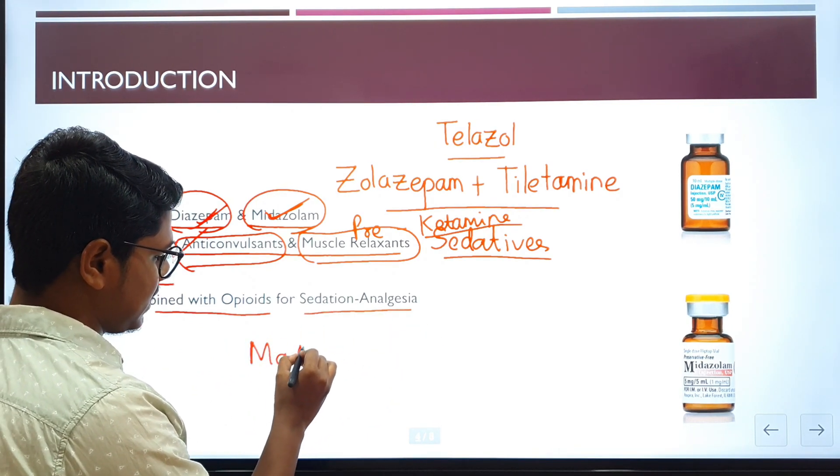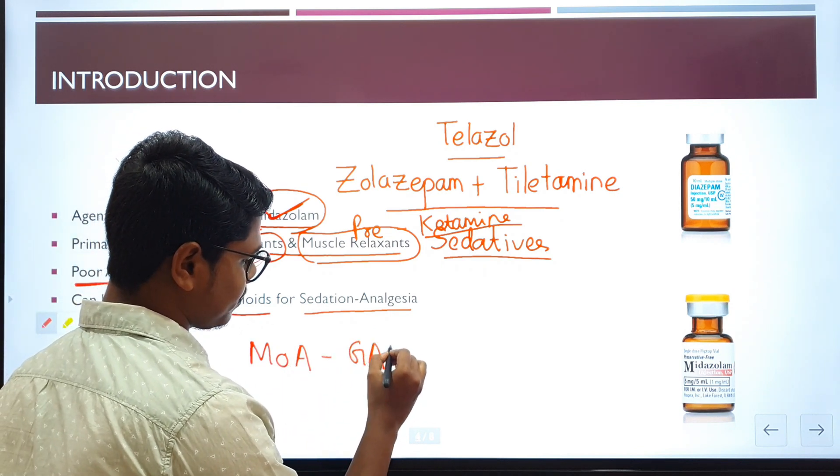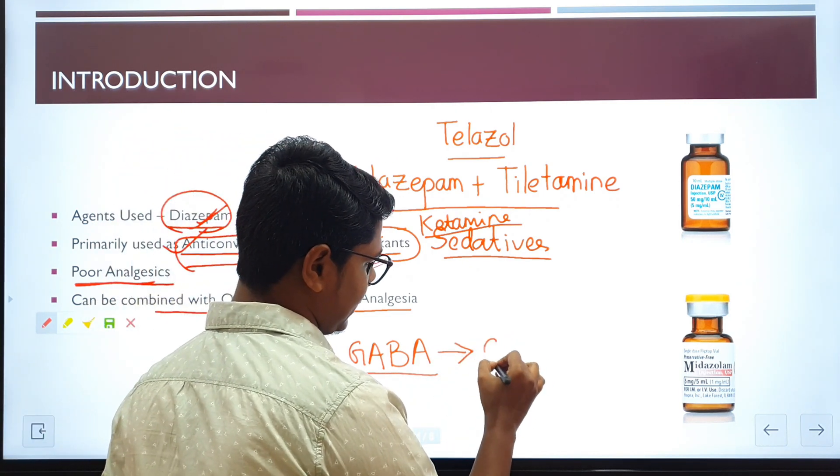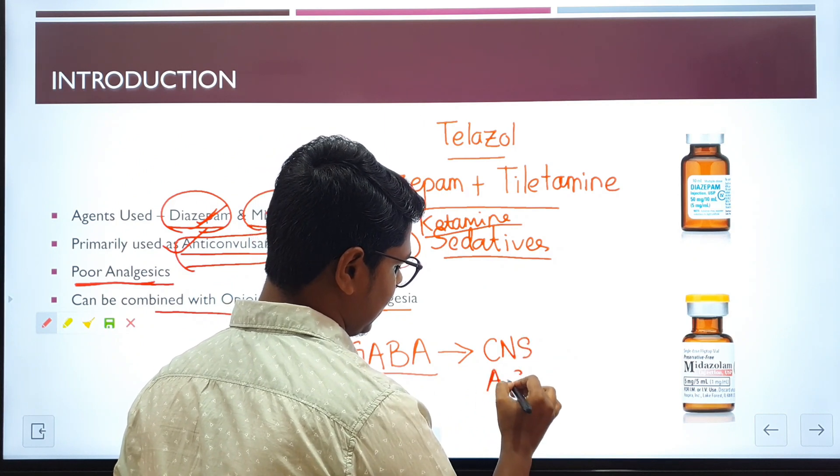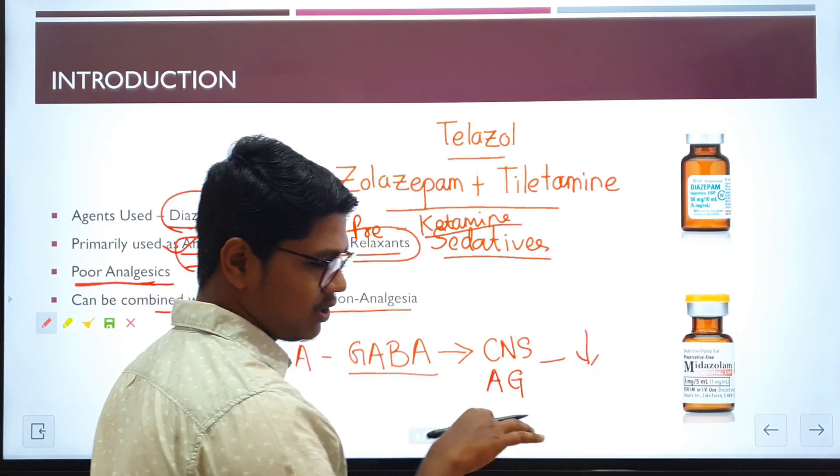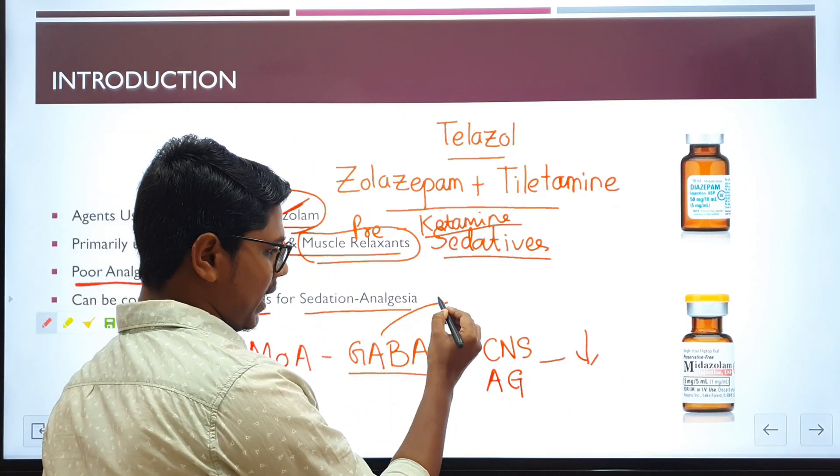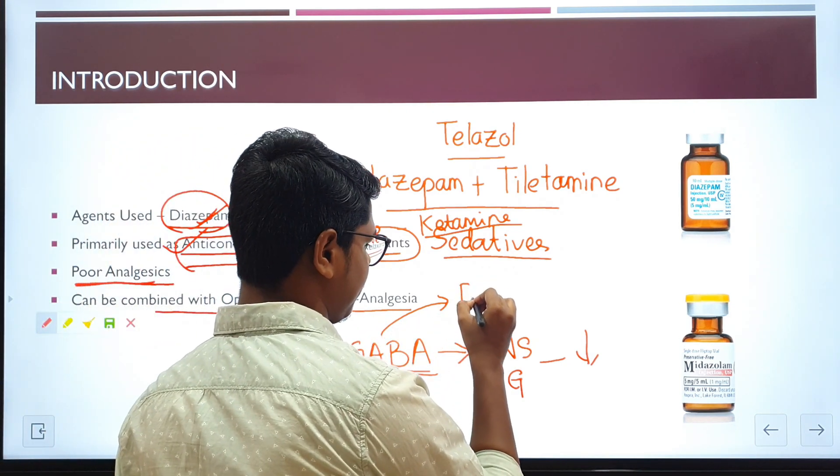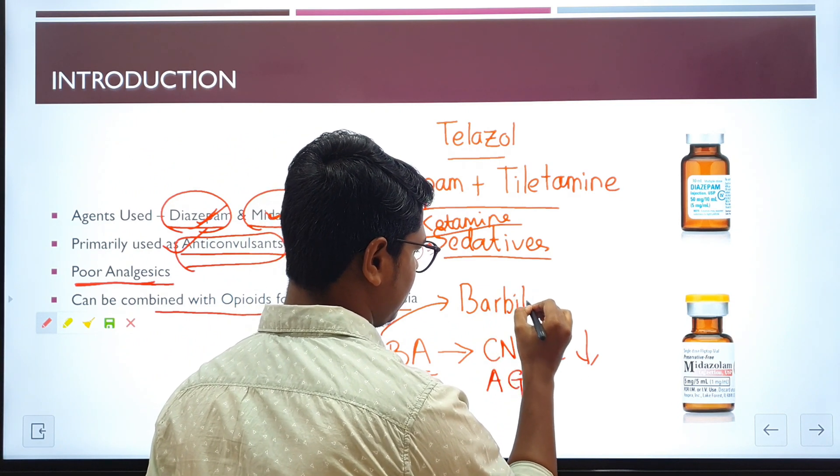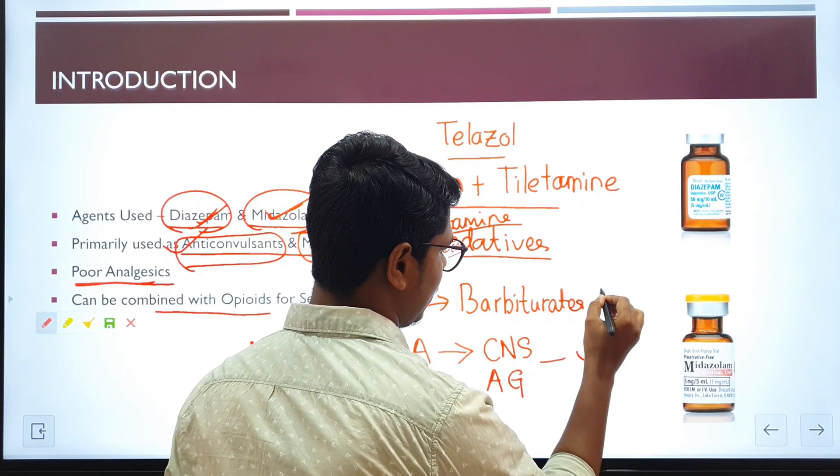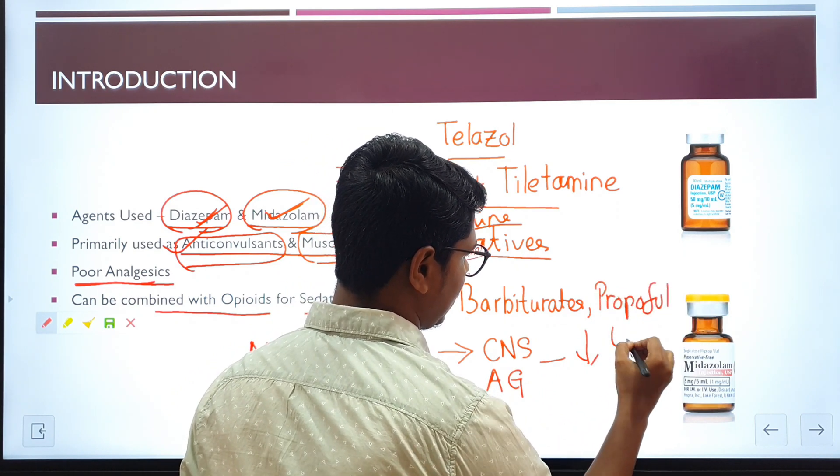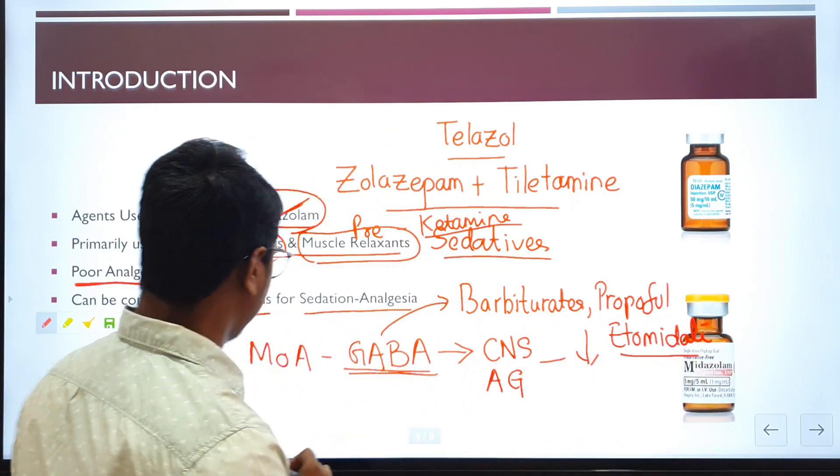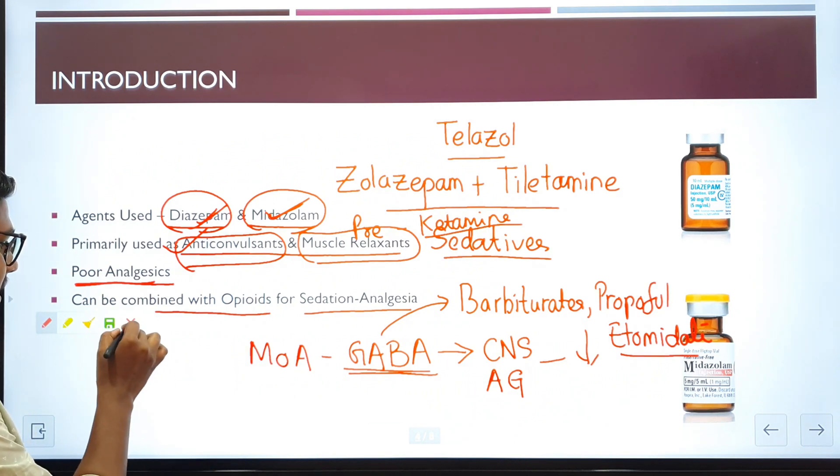Now, coming to the mechanism of action. They act on the GABA receptors, gamma amino butyric acid receptors. The GABA receptors are located in the CNS and autonomic ganglia. They decrease neuroexcitation. There are some anesthetics which act on GABA. You should remember the names. We will discuss them individually: barbiturates, propofol, and etomidate. This is the mechanism of action of benzodiazepines.